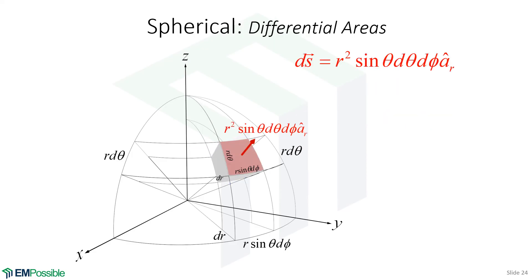We move on to the differential areas. Looking at the top face, differential area is a vector with a magnitude and direction. The magnitude is the area of this face. We have one edge of length r d-theta and a second edge of length r sine theta d-phi, making the area r squared sine theta d-theta d-phi. The direction perpendicular to that surface is the r direction, so we use unit vector ar. That is our first differential area.